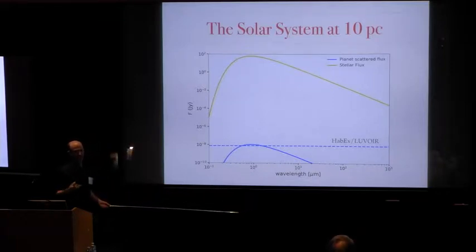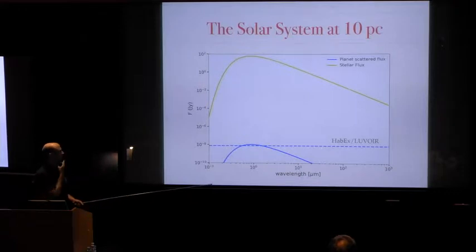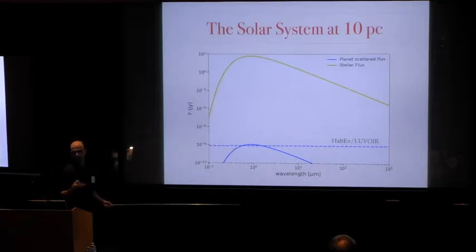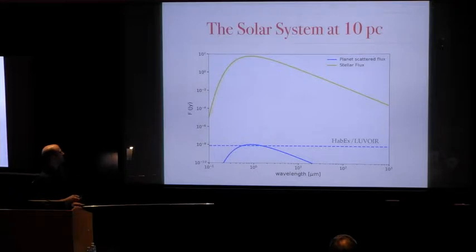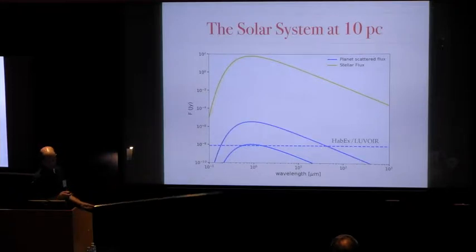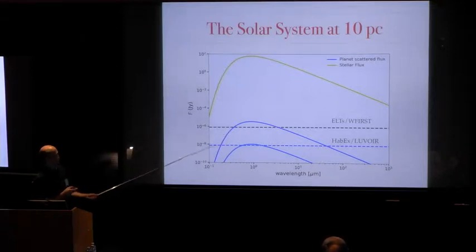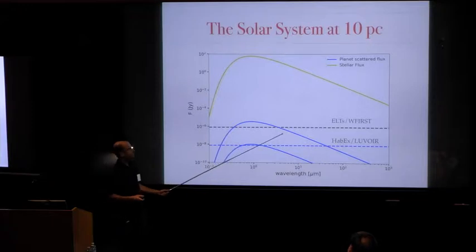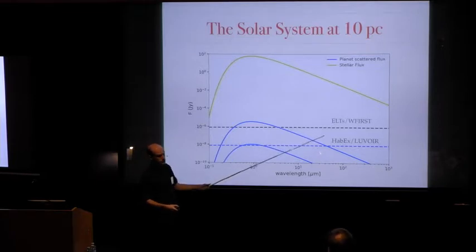That's what Habex and Luvoir are aiming to do, so you can get a spectrum of an earth analog atmosphere. But that's going to happen in the late 2030s. If you want to do something a bit sooner, you could go after a giant planet that's 10 times bigger, so you have 100 times bigger fluxes. That contrast ratio of 10 to the 8 is actually about the goal for the next generation of direct imaging instruments that would go on the ELTs. It's what Hannah mentioned as the sort of goal for W first if it flies with a coronagraph.